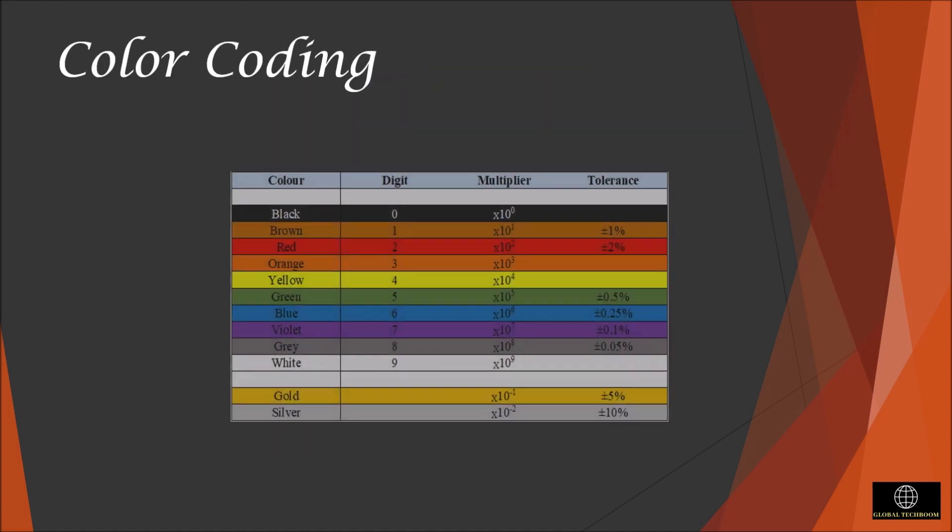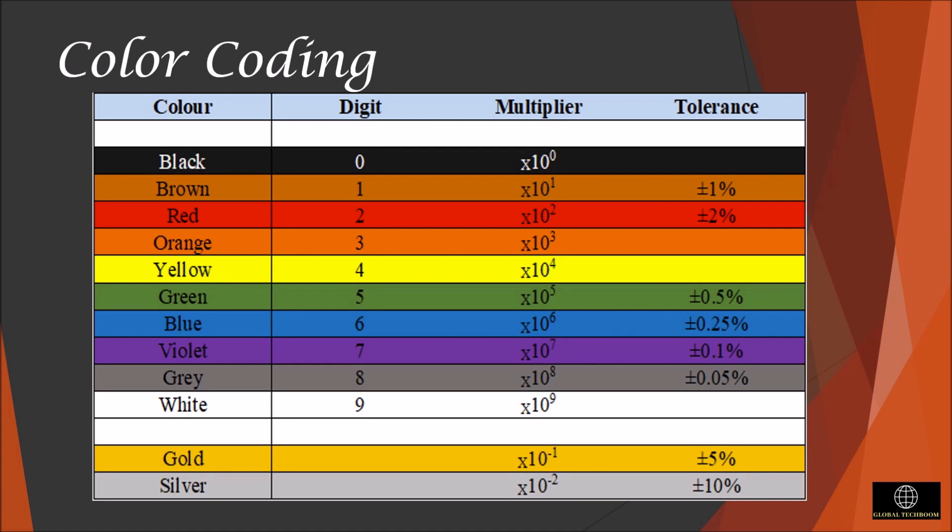Resistors are usually very tiny and so we cannot print the resistance value on them. So color bands are printed on them to represent the resistance. These color bands are called as resistor color codes. The color code tables are used to quickly identify a resistor's resistive value based on the colored bands and its percentage of tolerance with the physical size of the resistor. I'll explain this with the help of problems.